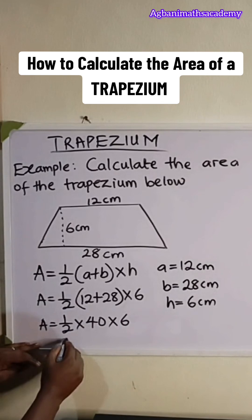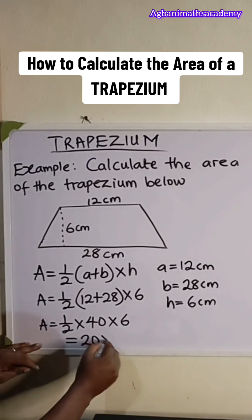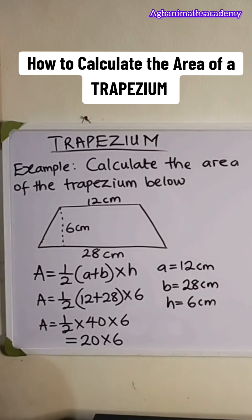Half times 40 is going to give us 20. So half 20 times 6. Half times 40 is the same thing as half of 40, which is 20. And then 20 multiplied by 6.